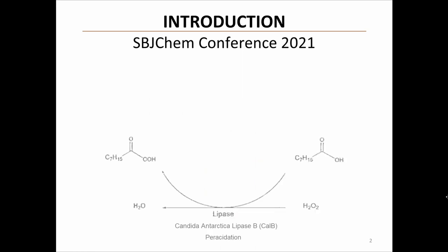Peracidation is a chemical reaction that consists in a carboxylic acid — for example, this octanoic acid molecule — reacting with a hydrogen peroxide molecule to give water and peroctanoic acid as products. This reaction can be catalyzed with an enzyme, like the Candida Antarctica lipase B used in this work.